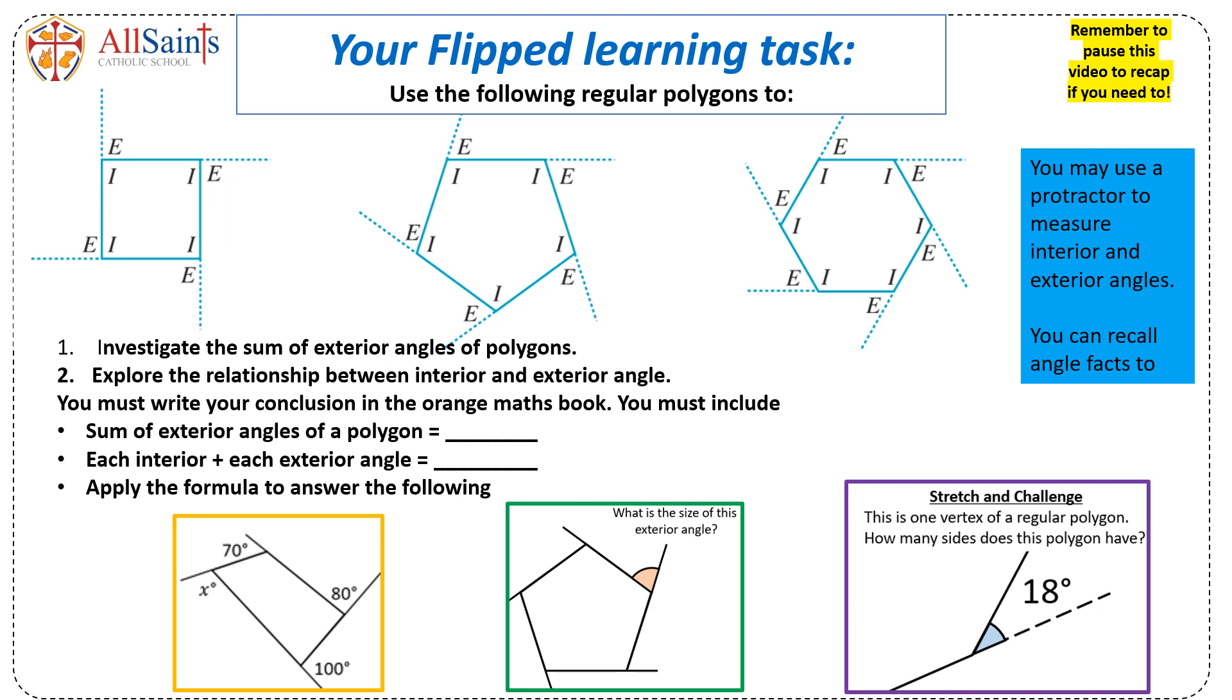For example, the sum of exterior angles of a polygon, the relationship between interior and exterior angles in your orange maths book. Once you have finished them, have a go at three questions at the bottom of the slide.